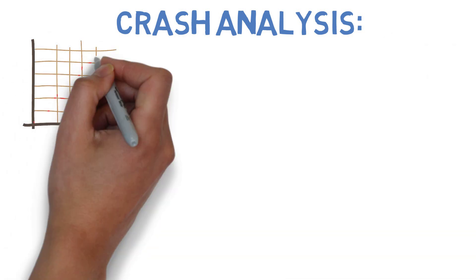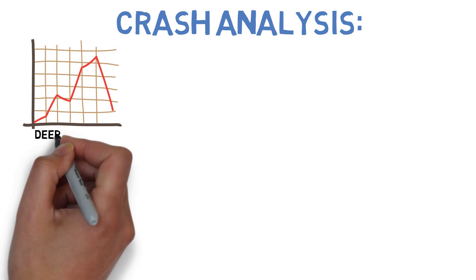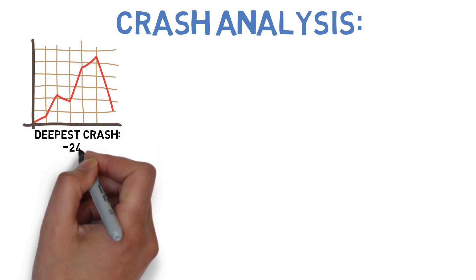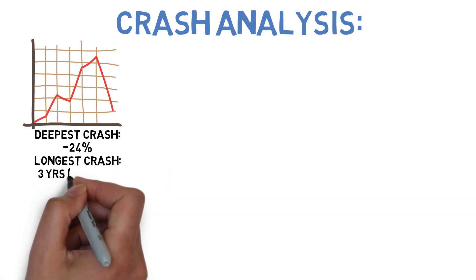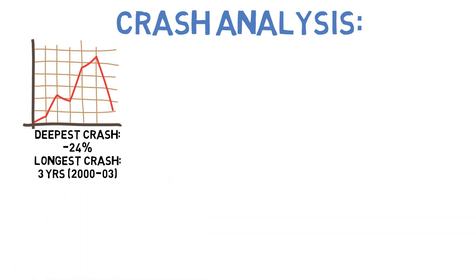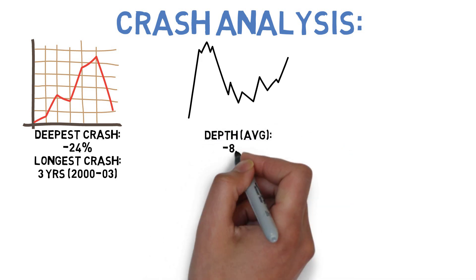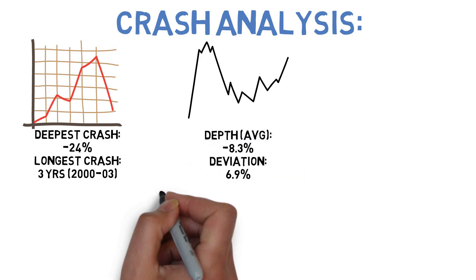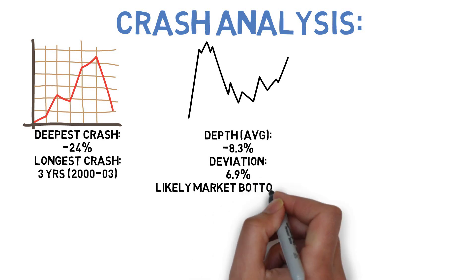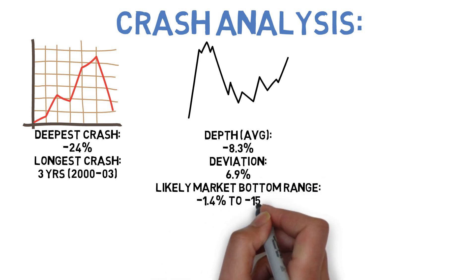For the Swenson portfolio, the deepest inflation-adjusted crash took place from 2008 to 2010, when it trailed inflation by nearly 24% at its worst. Its longest downturn took place from 2000 to 2003 during the dotcom crash, when it trailed inflation by as much as 9%. The average downturn saw the Swenson portfolio fall by 8.3% from previous highs, with a downside deviation of 6.9%, suggesting that the majority of downturns would see drops between 1.4% and 15.2% once they've bottomed out.